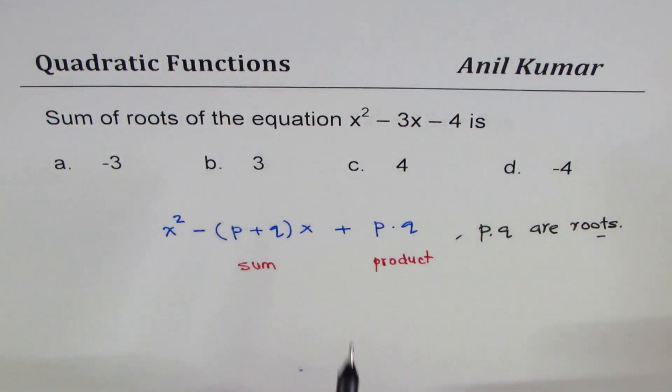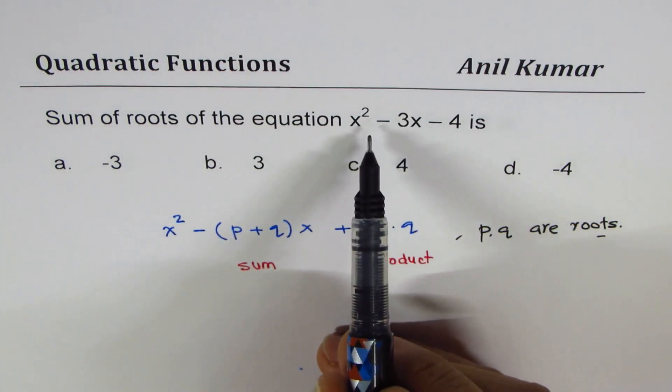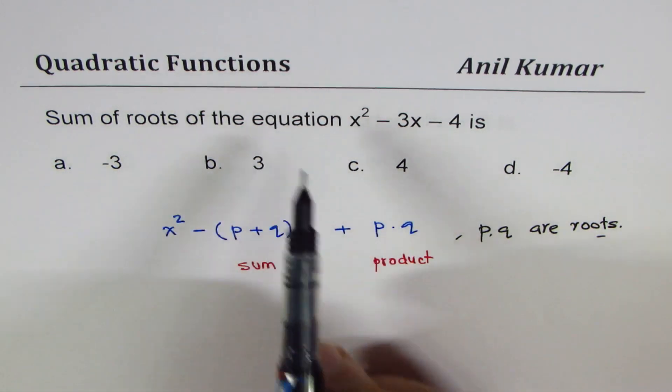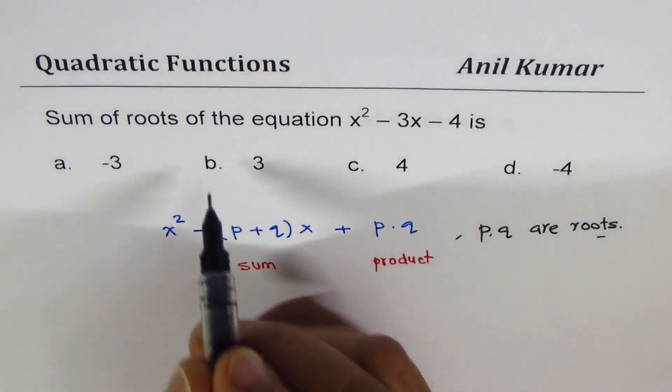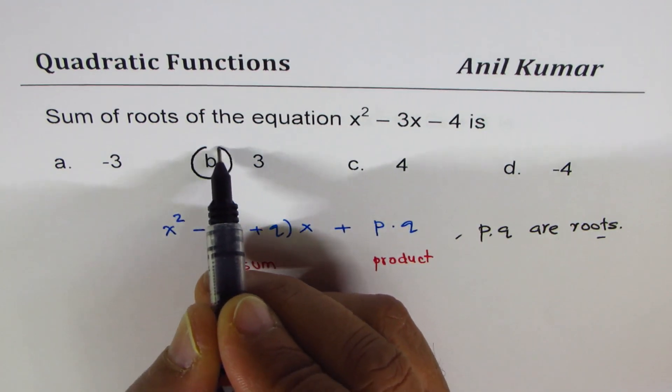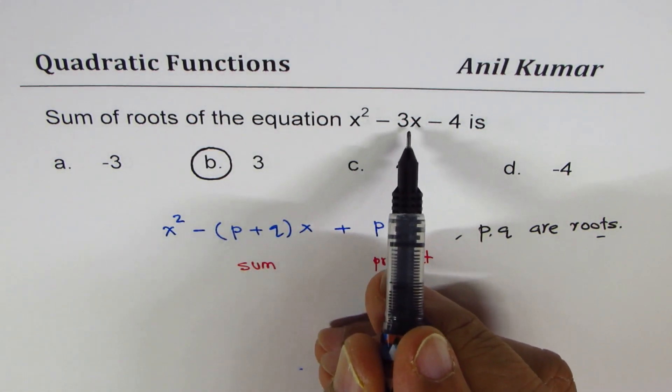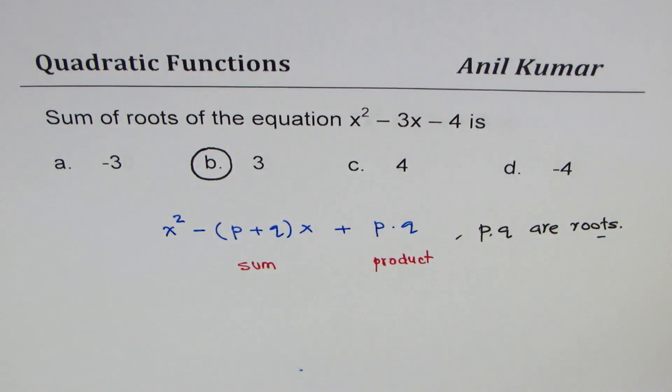Now in this particular case p and q where p and q are roots. So the coefficient of x in a normal quadratic function gives you sum of roots and therefore the answer from here you could straight away say it is b, negative of this coefficient of x. Well that's one way which you can immediately answer and that really helps in many competitive exams.